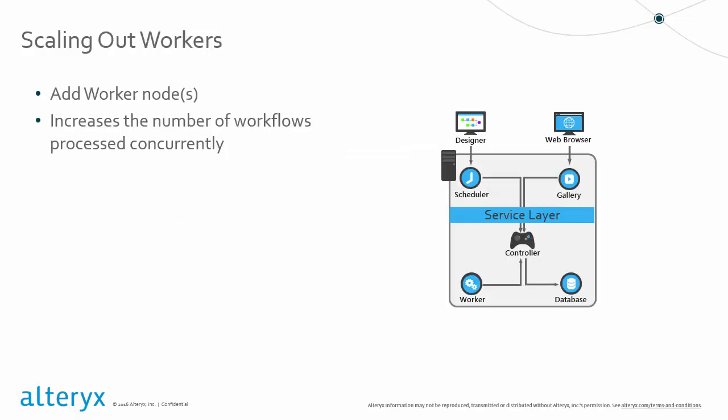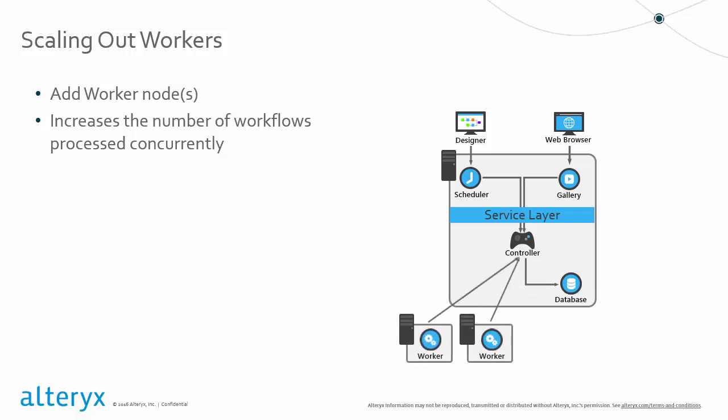When talking about scalability within the server, there are three main ways it can scale: through either the worker, the database, or the controller. Most typically, when users are experiencing long processing workflows and large queue waits, they will consider scaling out the worker node to handle more concurrent processes. There are two more considerations when scaling: either scaling up or scaling out. We can assign each worker to run more workflows at a time or designate more nodes to run more concurrent processes.